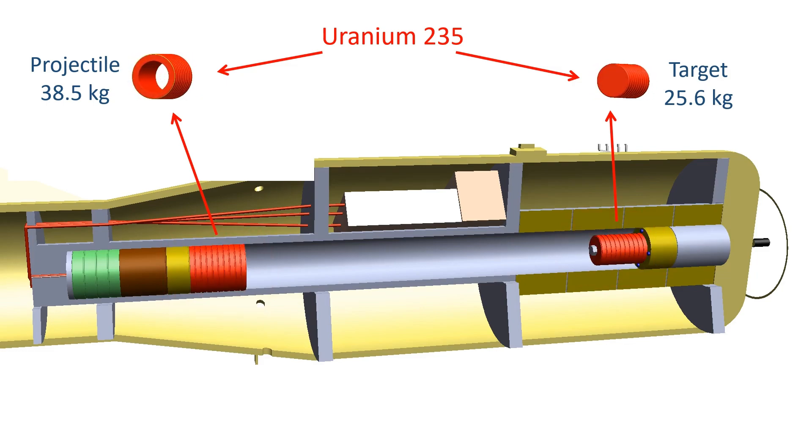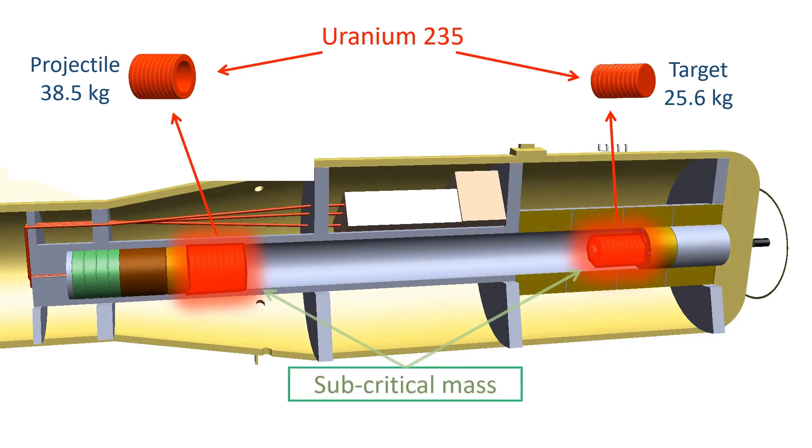You might wonder, why the uranium is designed into two separate shapes. This is because it is important to keep the uranium in a sub-critical mass before detonation.